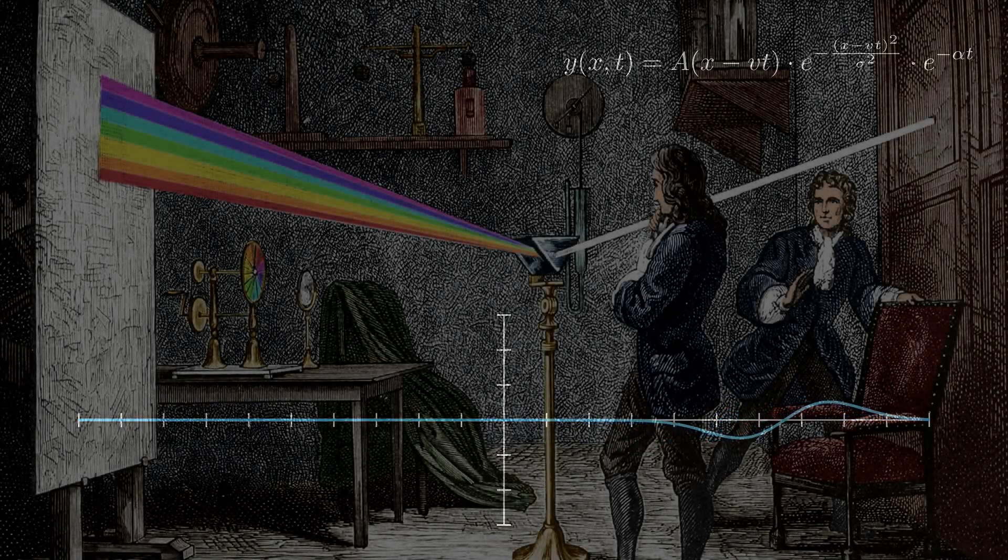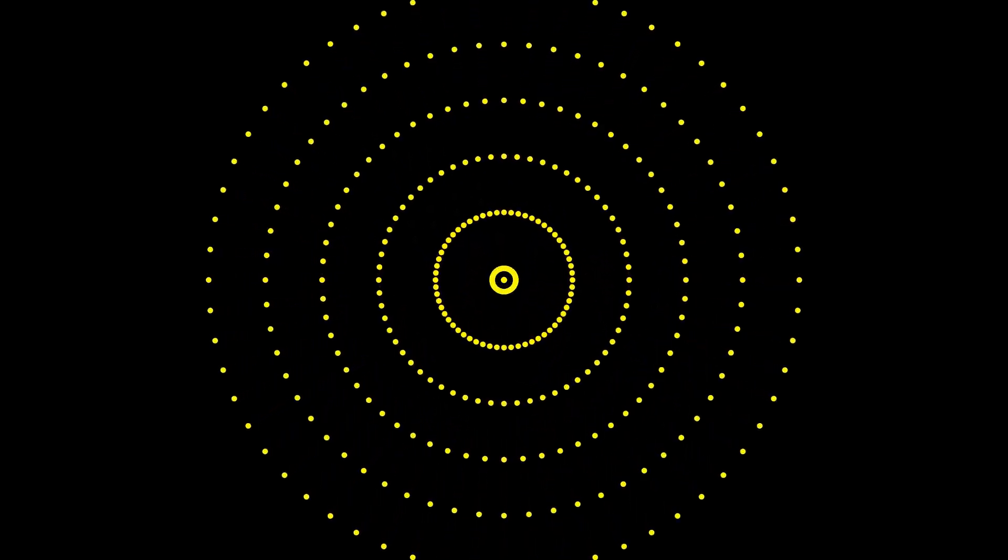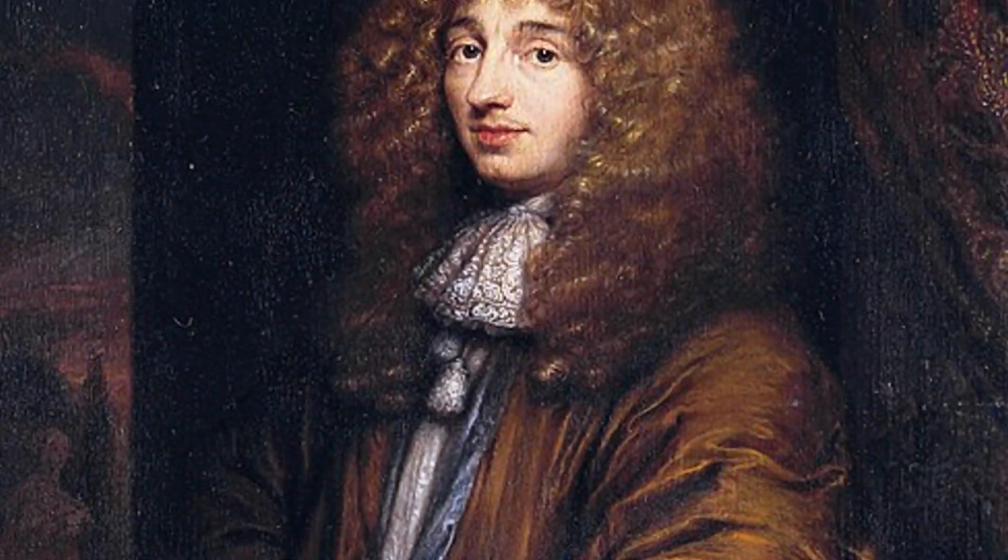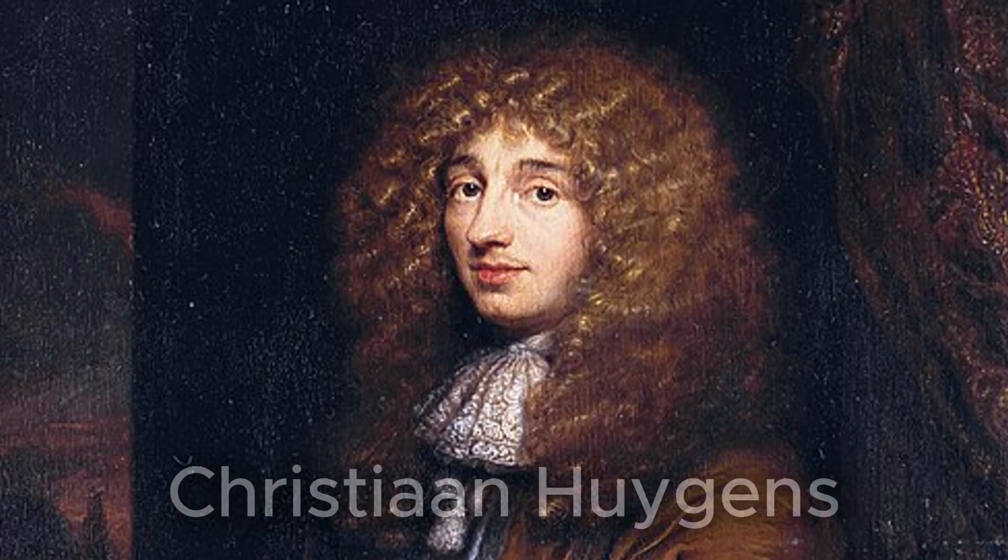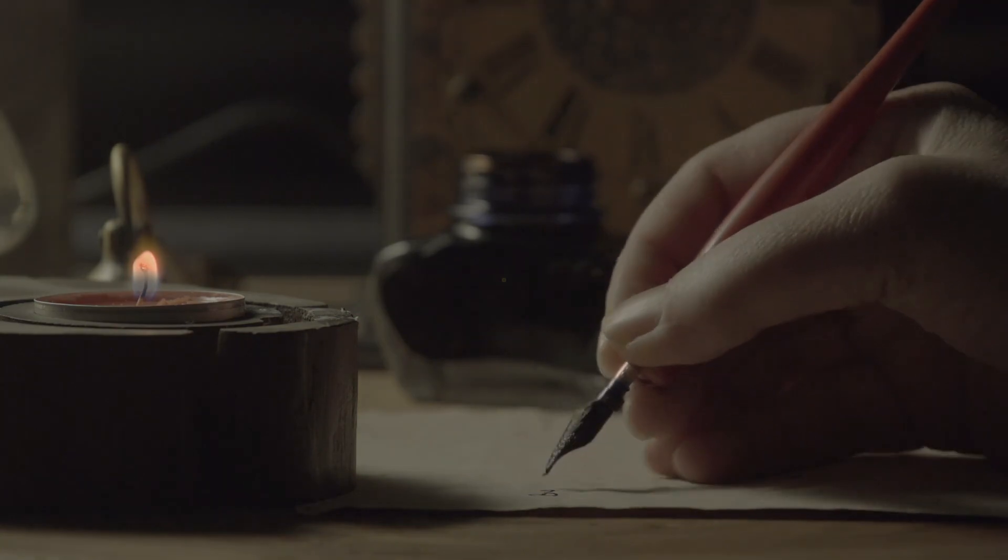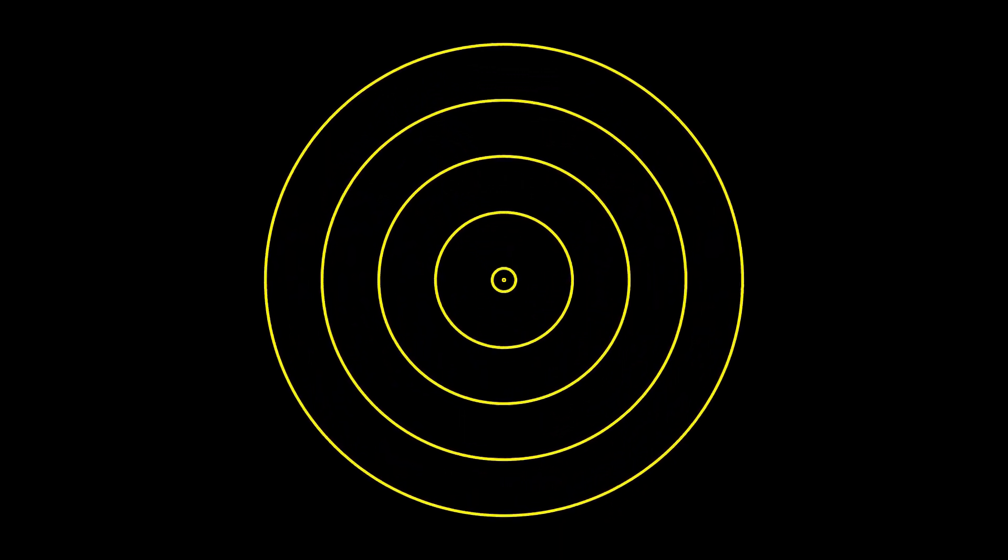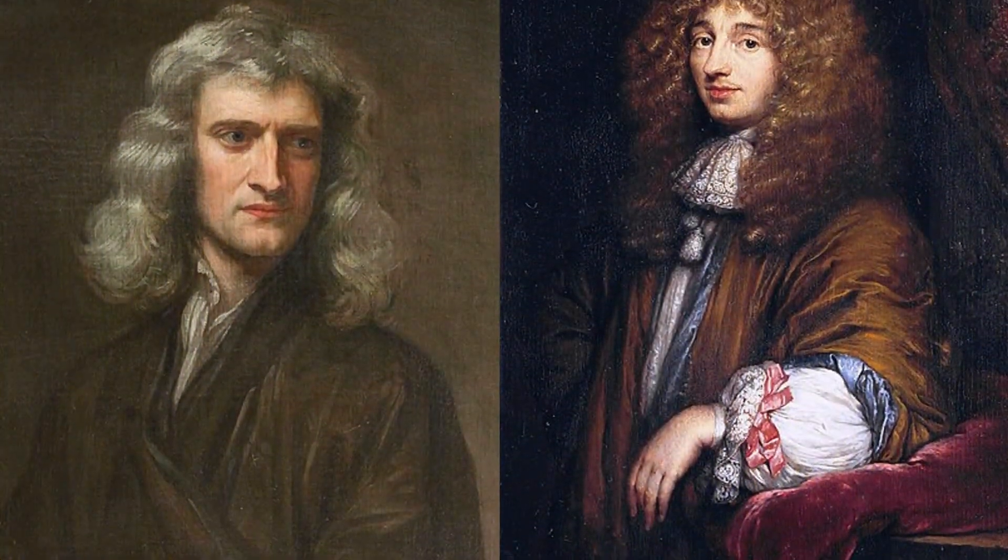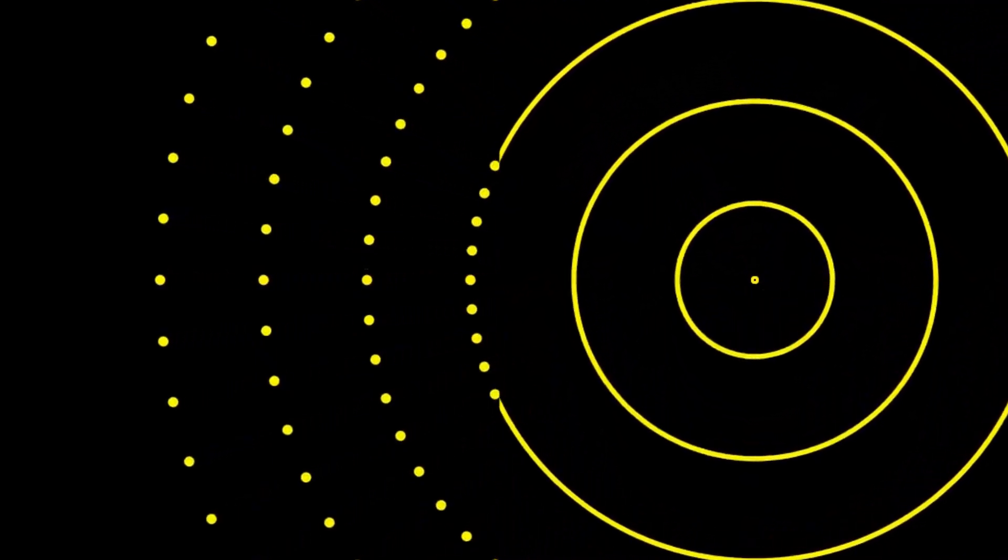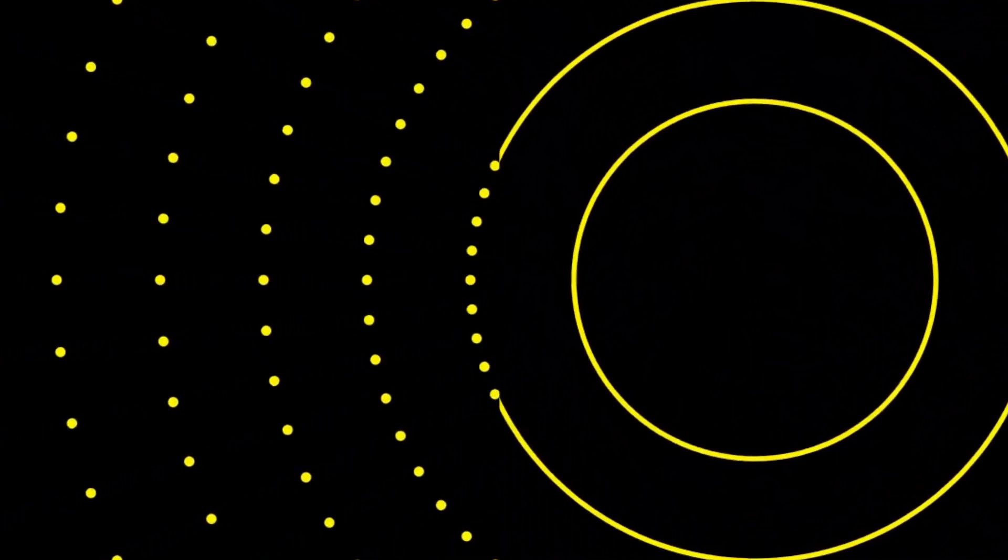In the 17th century, many believed light was made out of tiny particles. Newton called them corpuscles. However, not everyone agreed. Dutch physicist Christian Huygens proposed a different idea, that light was actually a wave spreading out like ripples on a pond. Two brilliant minds, two completely opposite ideas, and for over a century, no one knew who was right.